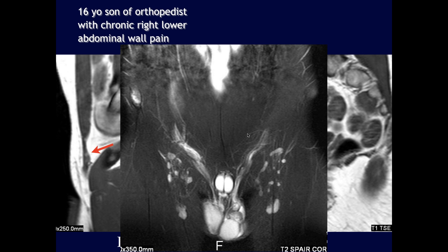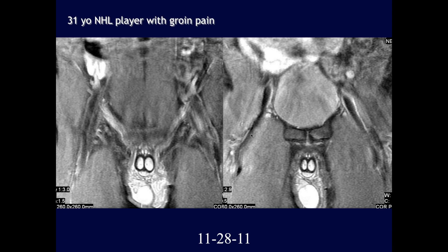Historically, chronic appendicitis was a diagnosis given to such patients — now known not to exist — and general surgeons were evaluated by how often they found a normal appendix at laparotomy. Modern imaging has replaced this diagnostic uncertainty.